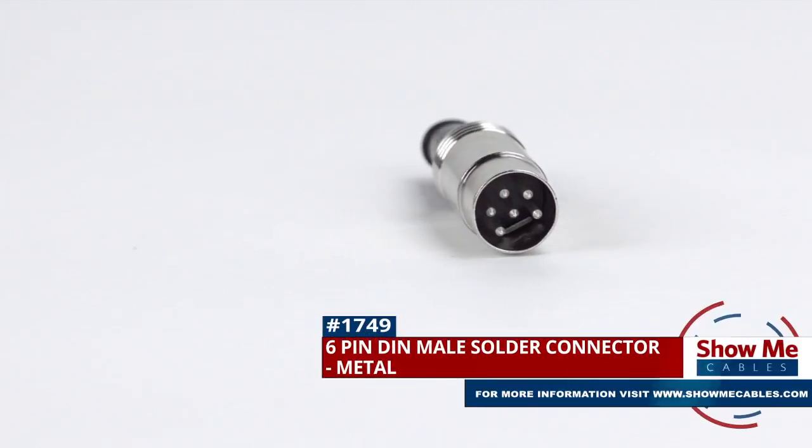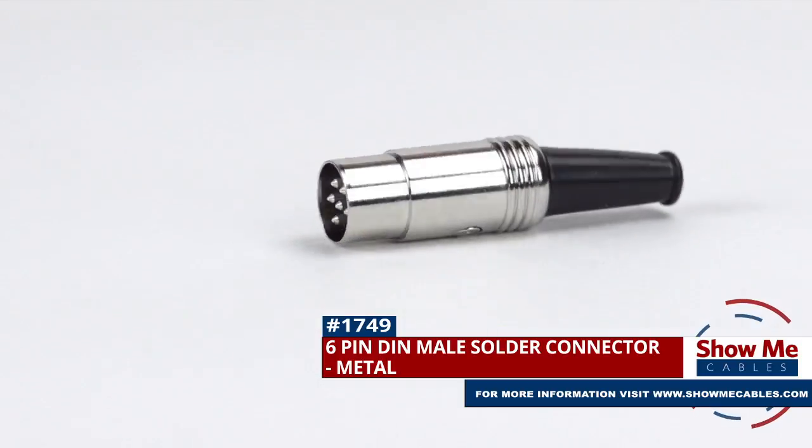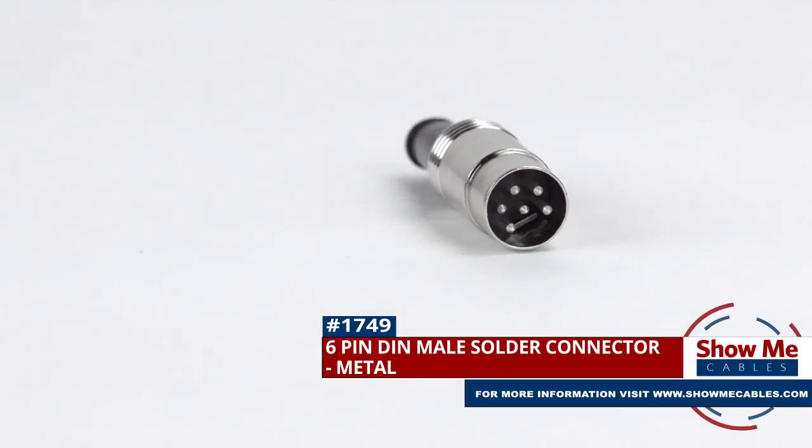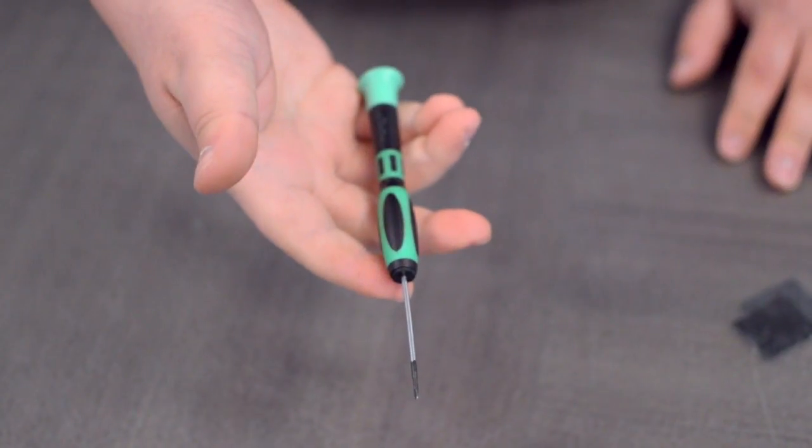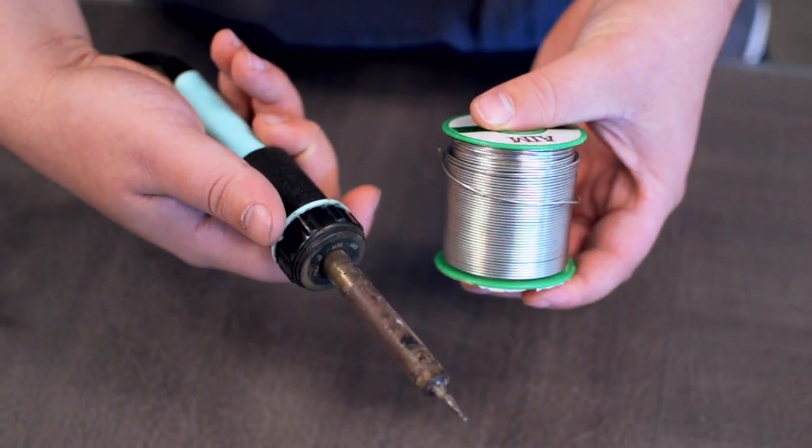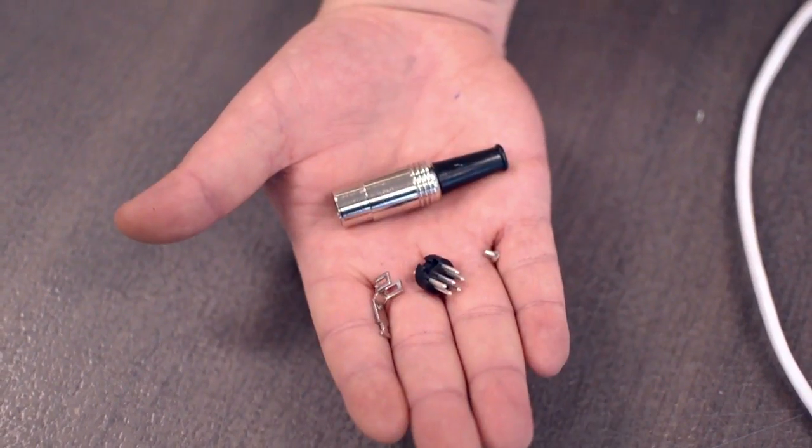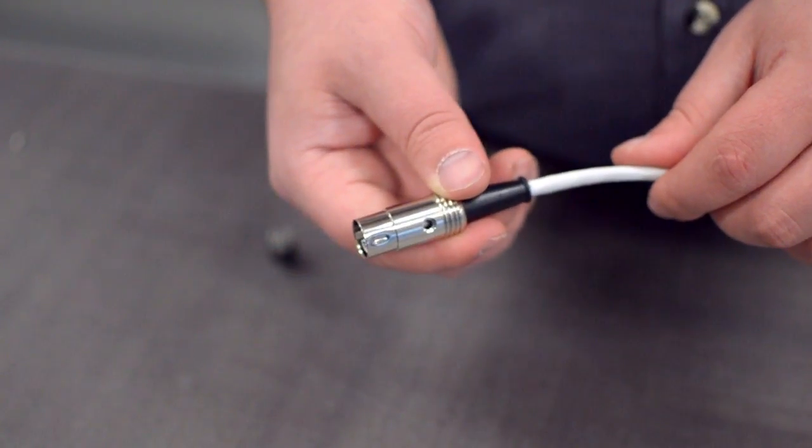This is the 6-pin DIN male solder connector. To install, you will need the following items: low voltage cable, wire strippers, a small screwdriver, solder and soldering iron, and the DIN connector. Start by inserting the boot over the jacket.